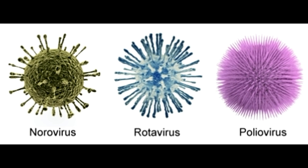Examples of non-enveloped viruses: Adenovirus usually causes upper respiratory tract infections, but is sometimes also responsible for gastroenteritis, urinary tract infections, and cystitis. Poliovirus, rotavirus, and norovirus are other examples of non-enveloped viruses.